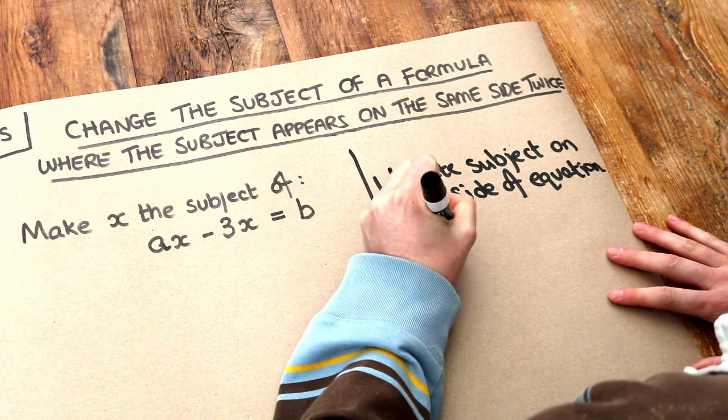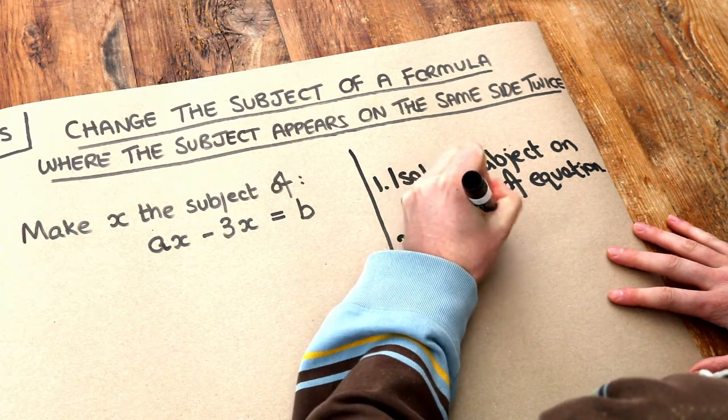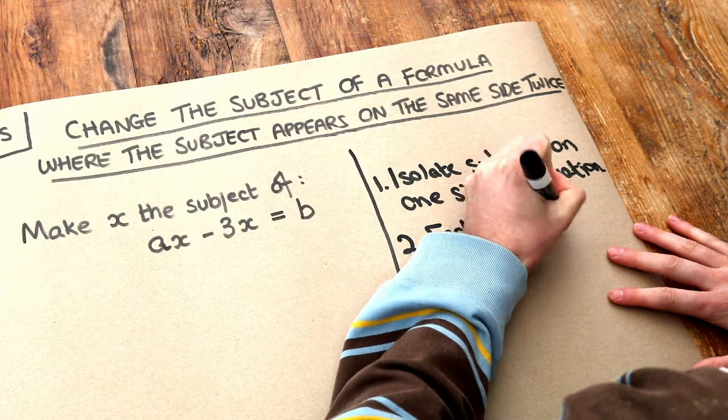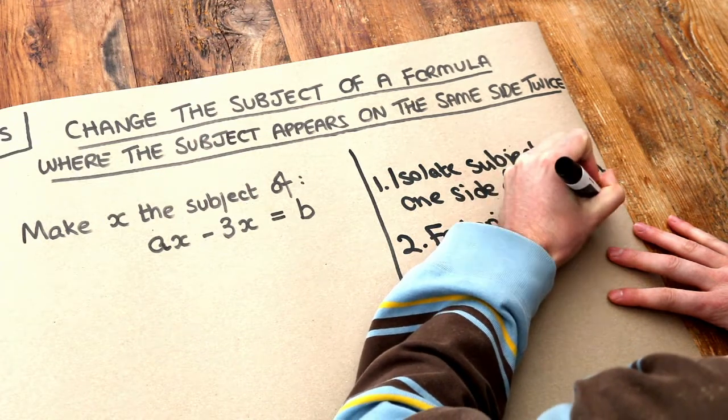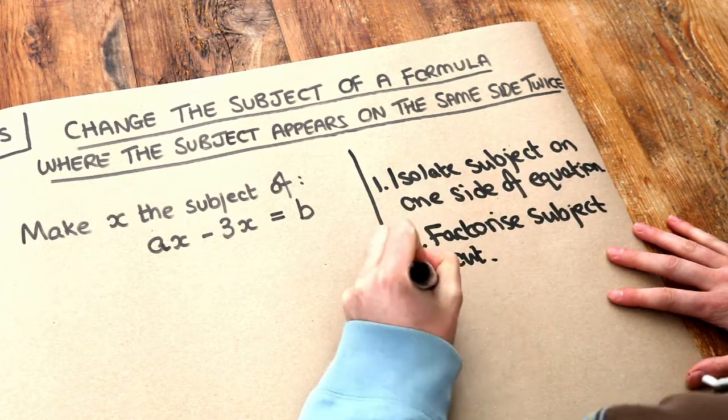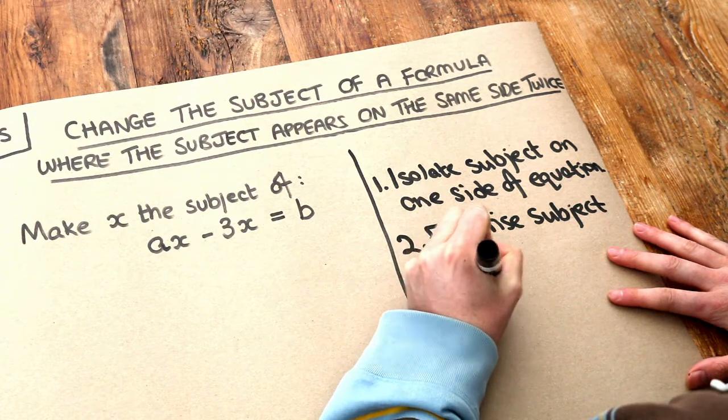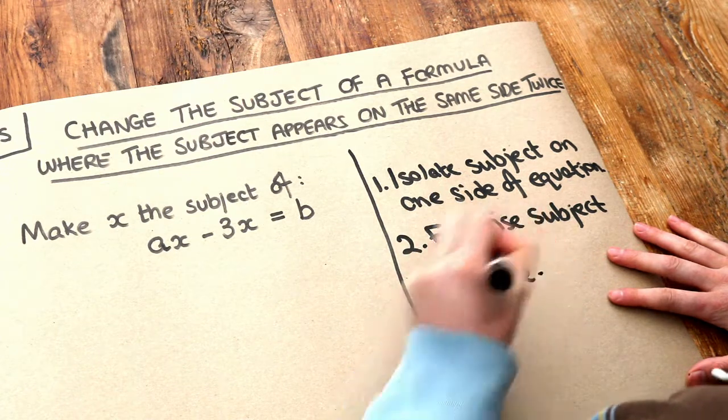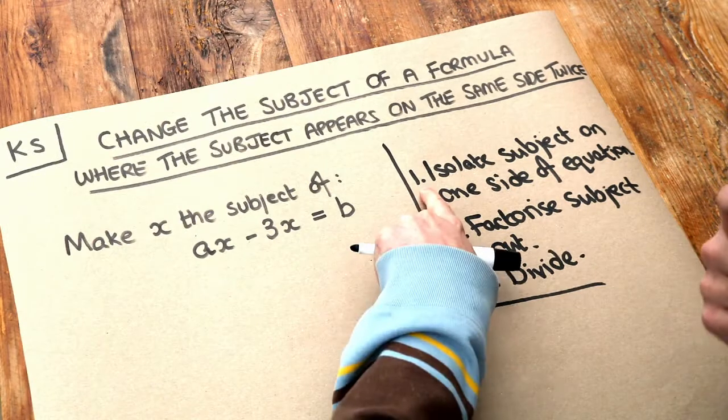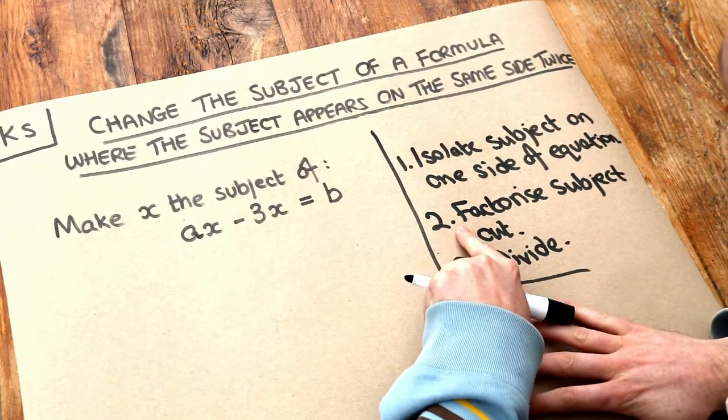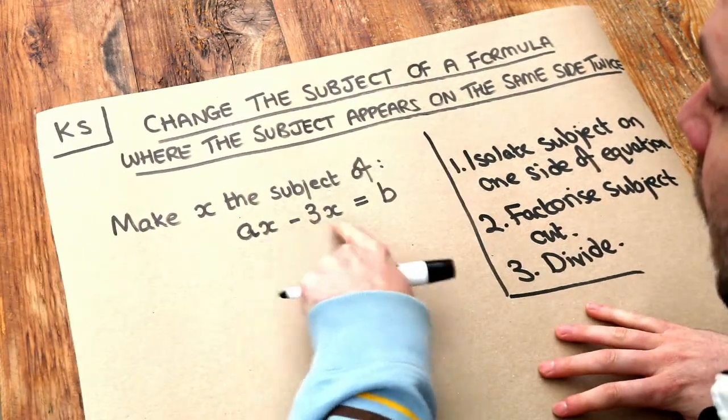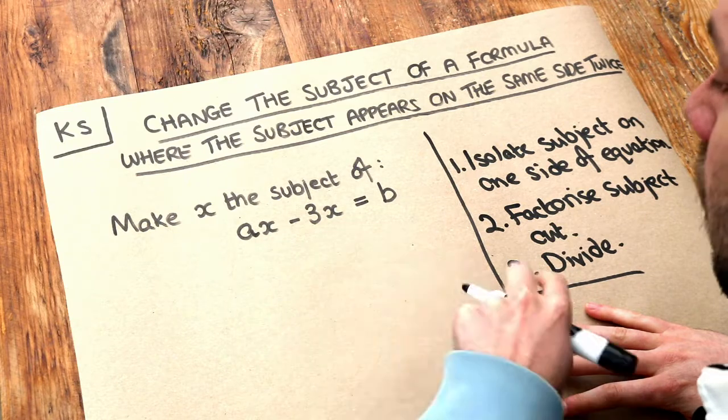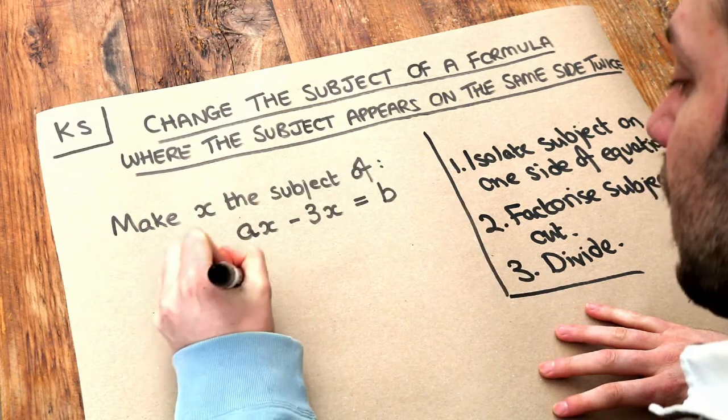Then you factorise the subject out, and then you just divide appropriately. We've already done step one because all the x terms are on one side. We now need to factorise the subject out. We can see these have a common factor of x, so if we factorise the x out,